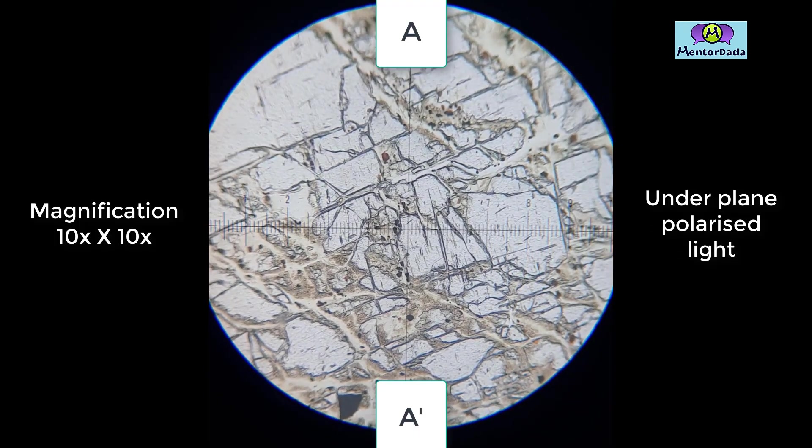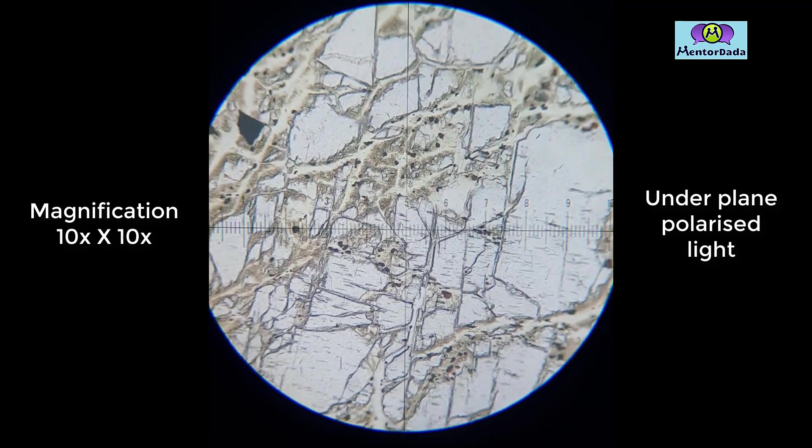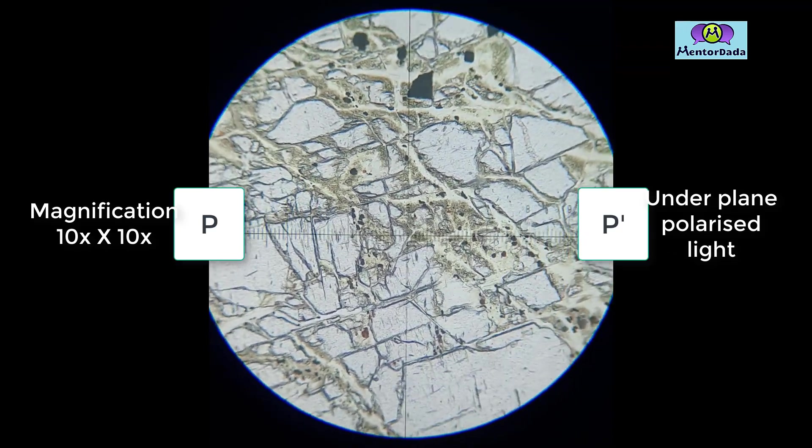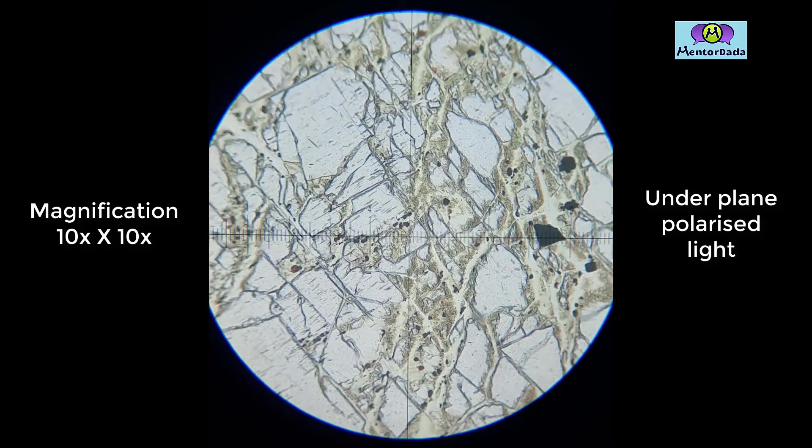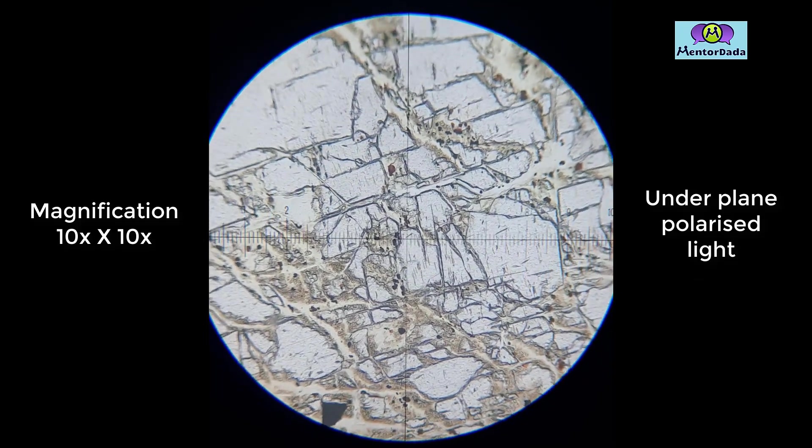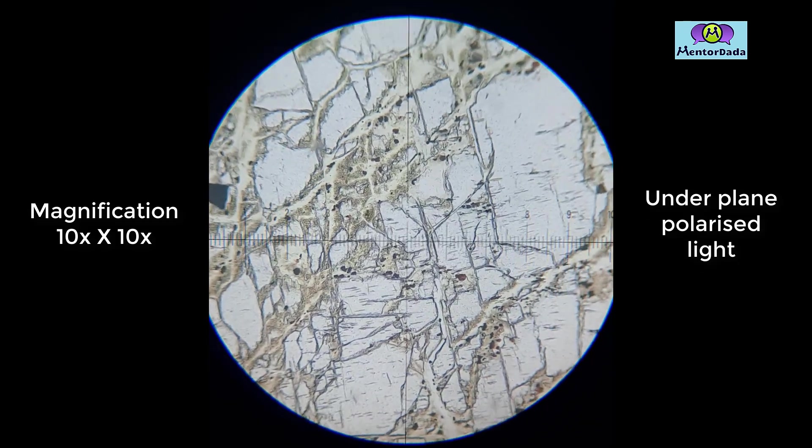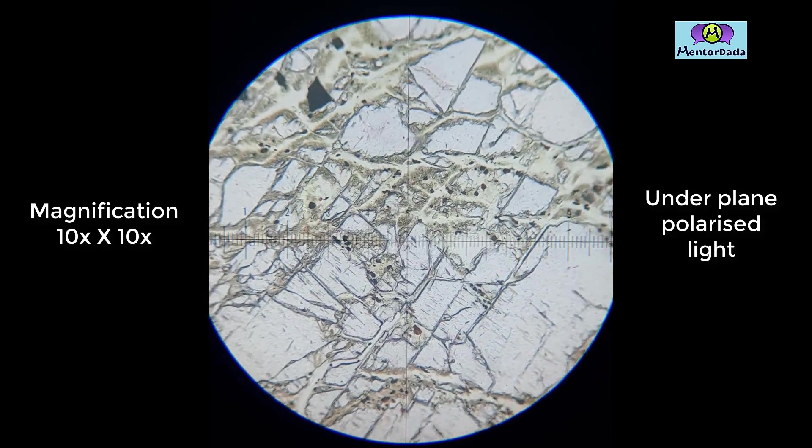We are now viewing the mineral under plane polarized light at 10x magnification. We normally use a refracted petrographic microscope for analyzing this thin section. As we rotate the stage of the microscope, the mineral on the thin section does not change its color, so the mineral is non-pliochroic.